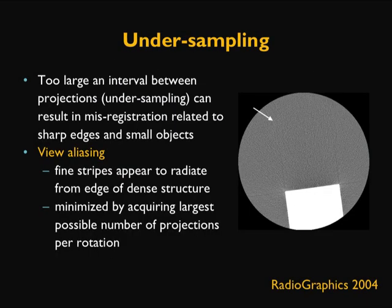A third type of physics-based artifact is under-sampling. Shown here is an image of a very dense object such as Teflon on a uniform surface. Under-sampling is caused when too large an interval between projections occurs, resulting in mis-registration related to sharp edges and small objects. As shown by the white arrow, streaks appear and are due to under-sampling of the projection data. This is called view aliasing, where fine stripes appear to radiate from the edge of a dense structure. This is minimized by increasing the number of projections per rotation.